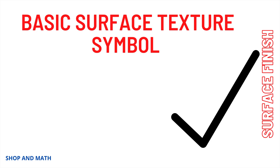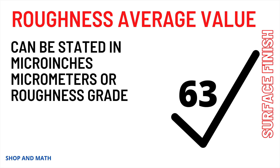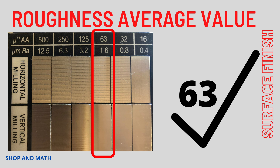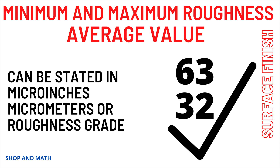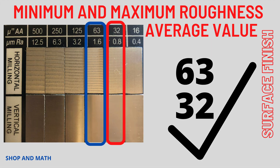Basic surface texture symbols. Roughness average value can be stated in micro inches, micrometers, or roughness grade. Using the visual comparator, you can see micro inches on top and micrometers on the bottom. Minimum and maximum roughness average value can also be stated in micro inches, micrometers, or roughness grade. Using the visual comparator gauge, the red would be the minimum and the blue would be the maximum roughness — as long as you're between these two finishes, your part would be approved.